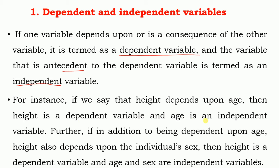For instance, if we say that height depends upon age, then height is the dependent variable and age is the independent variable. We know that a person's height depends upon age. So height is called the dependent variable, and age is the independent variable. Furthermore, if height is also dependent upon the individual's sex, then height is the dependent variable and both age and sex are independent variables.